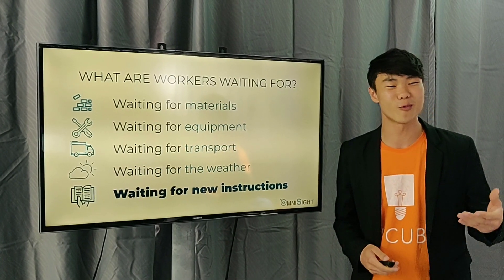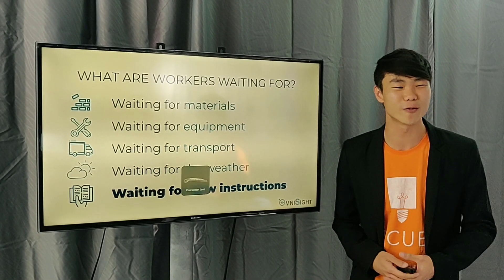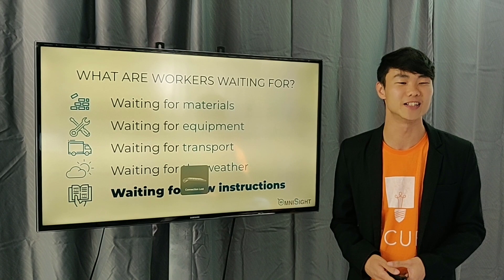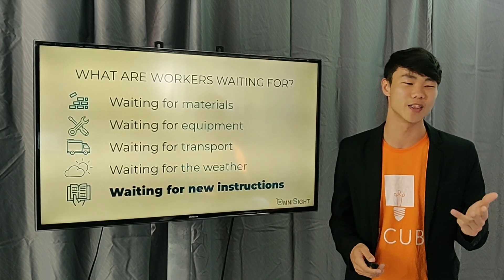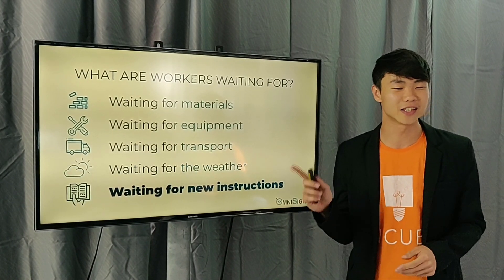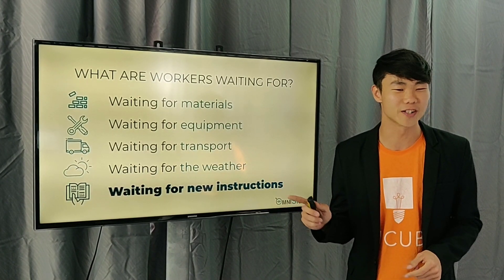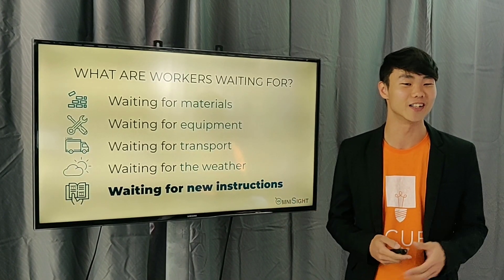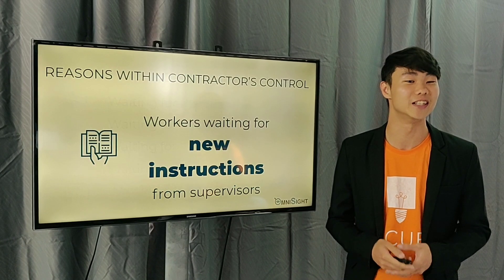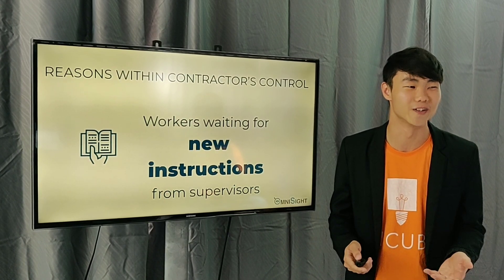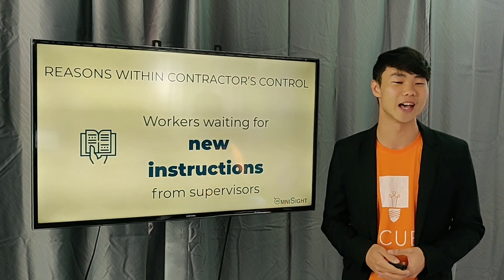We asked him why workers are always waiting. He said they're waiting for materials, equipment, transport, and weather. Then he said the last one: new instructions. And he realized that's something that is within his control — so we wanted to help with that.